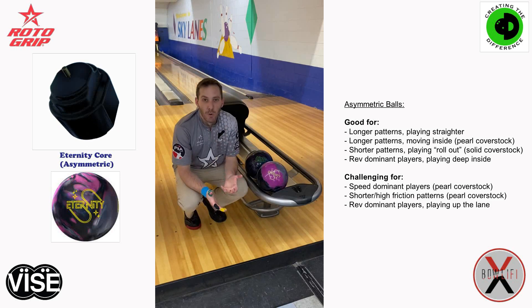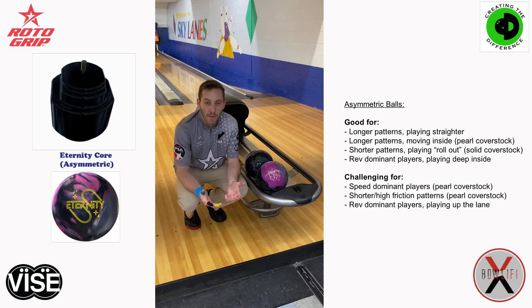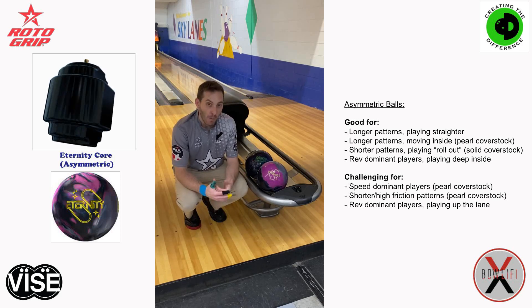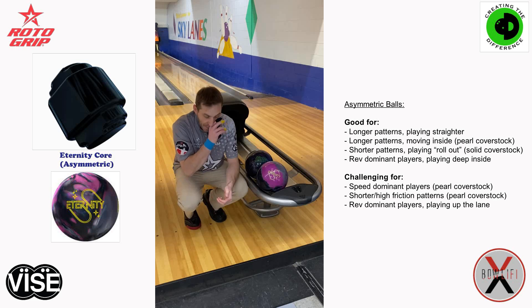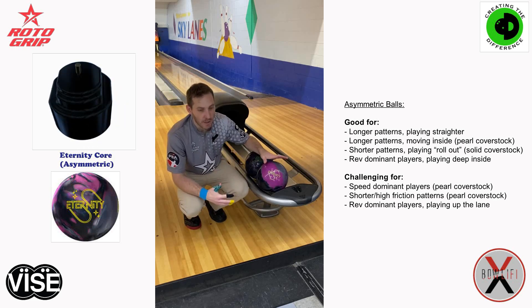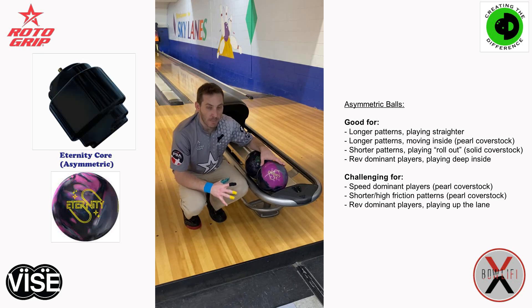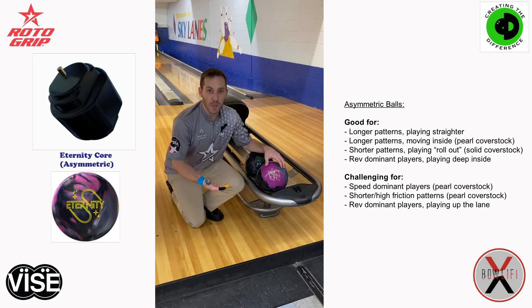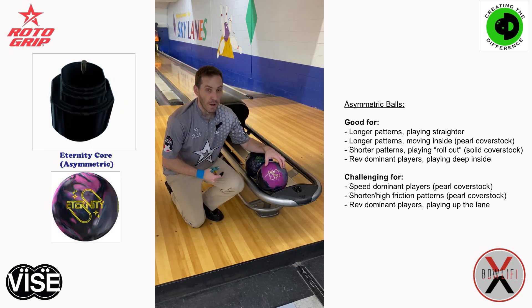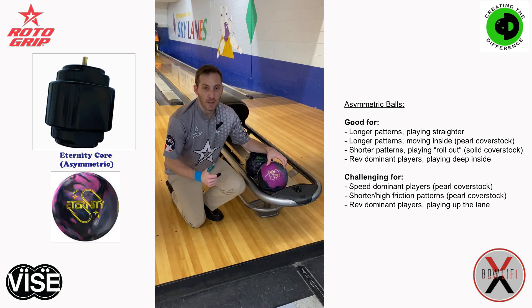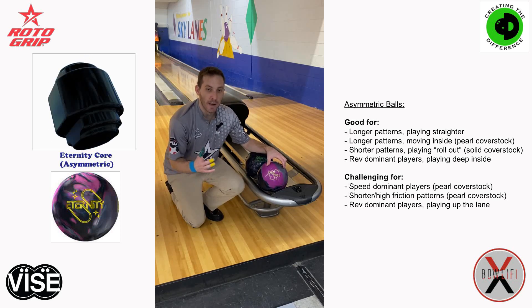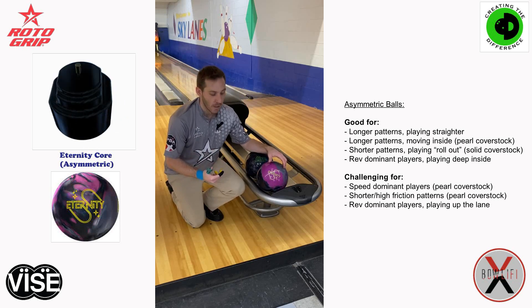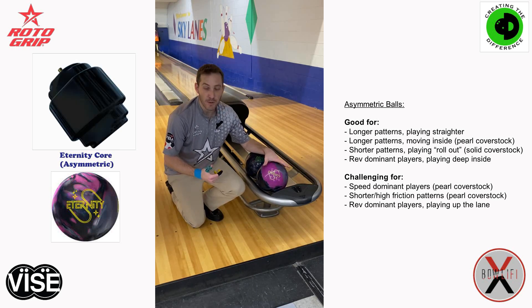Now we've seen what the asymmetric bowling ball does throughout the transition of an oil pattern, and also what different styles, releases, and ball speed will impact how that ball is going to react. We were looking at a pearl asymmetric in this scenario. A couple situations where asymmetric bowling balls are good: one is longer oil patterns, trying to play straighter, getting that ball to read off the friction spot and make its move, but not so hard that it continues going left or leaves big splits — that's when a good asymmetric comes into play.